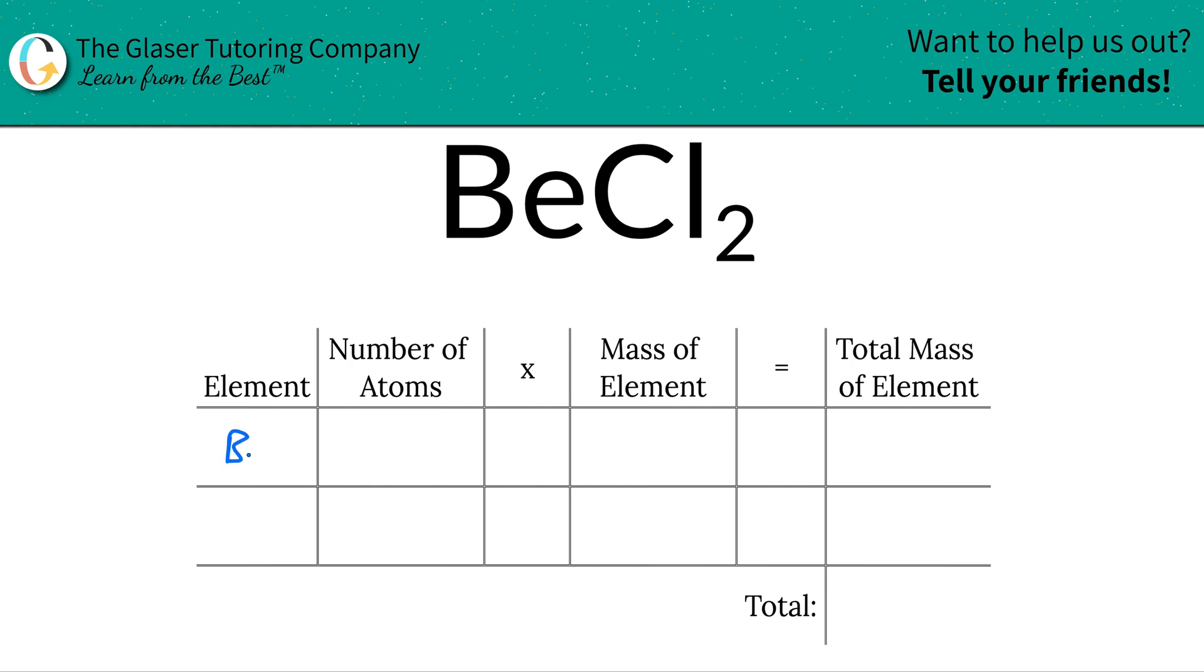So I have beryllium, Be, and I have chlorine, Cl. The next is to write down the number of atoms and that's where the subscripts come into play. So at the bottom of beryllium there is a 1, even though it's not there, there is a 1 there. And then chlorine, the bottom of that is a 2, right? So I have two chlorines, that means. That's what the subscripts tell us.